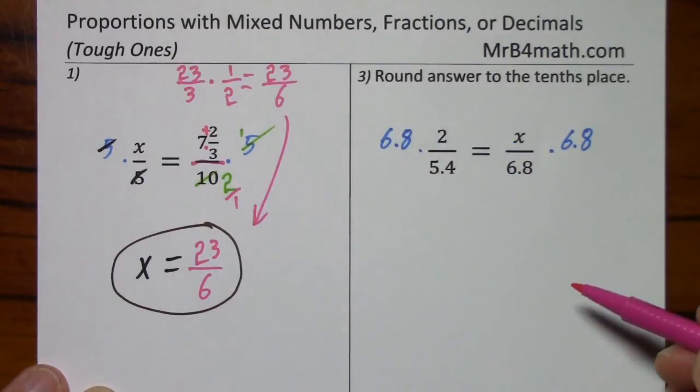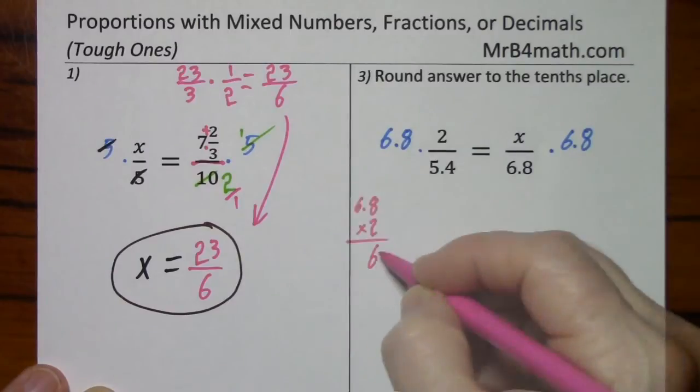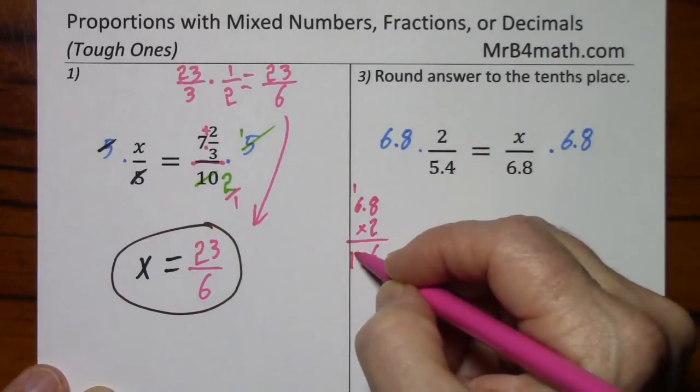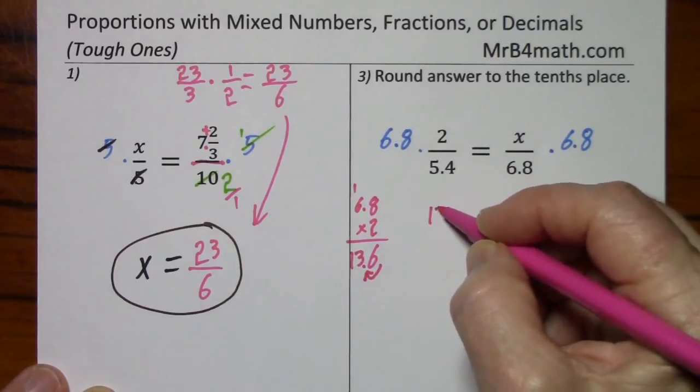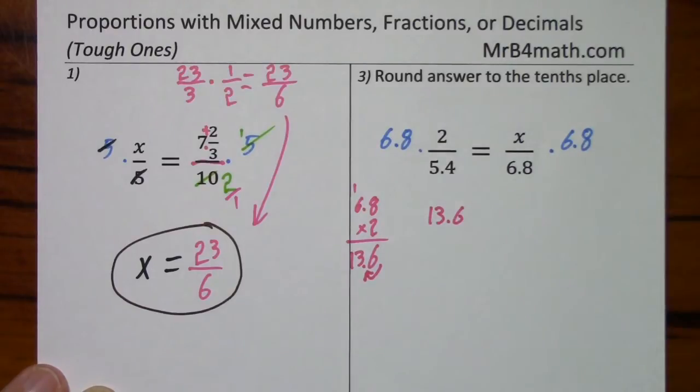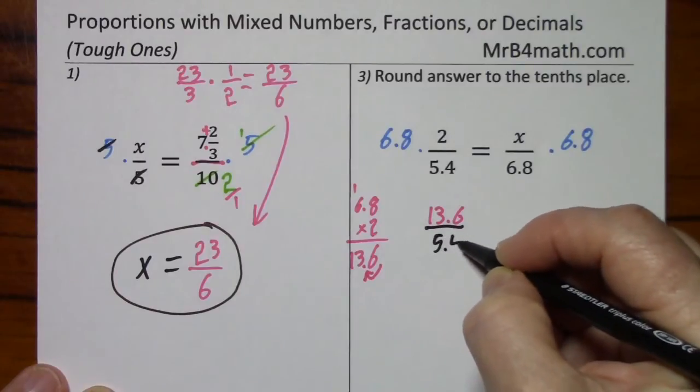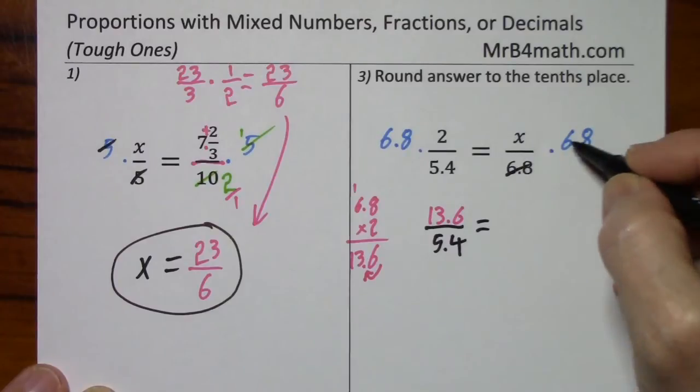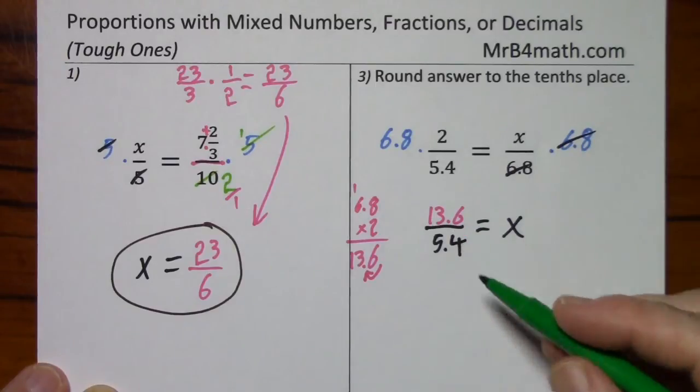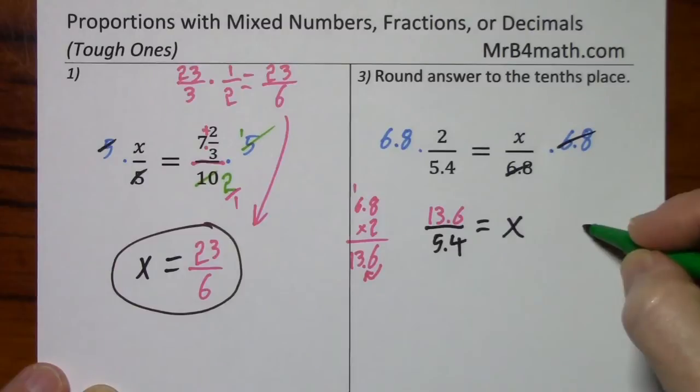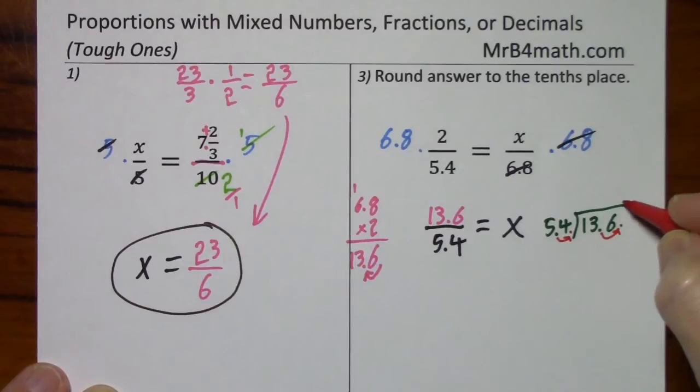Obviously on this side, they're going to cancel. So over here, it's easier to multiply than divide, so we'll do the multiplication first. And because of the one decimal, so we have 13 and 6 tenths over 5 and 4 tenths. So what we have to do now is clean this up. So this is 13.6 divided by 5.4. Of course, you have to move your decimals.